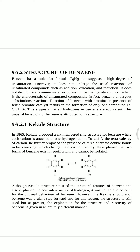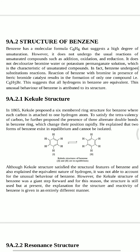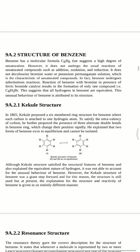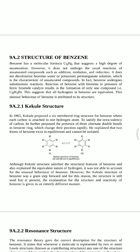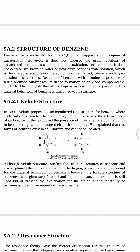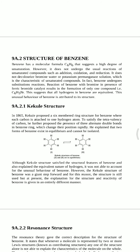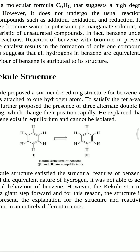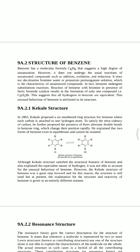The unusual behavior of benzene is attributed to its structure. According to the Kekulé structure proposed in 1865, the six-membered structure of benzene has each carbon attached to one hydrogen atom to satisfy the tetravalency of carbon. To satisfy further bonding, he proposed the presence of three alternating double bonds in the benzene ring which change their position rapidly. He also explained that two forms of benzene exist in equilibrium and cannot be isolated — the double bonds are interchangeable between both structures.